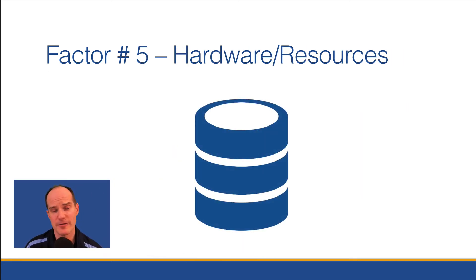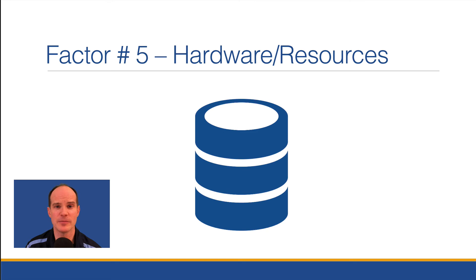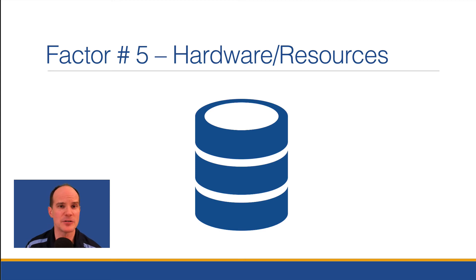Finally, factor number five — we get to the hardware resources, the part that the customer normally points to first. Yes, it does play a factor, and even more significantly, the more users you have. The more users using a system, the more important it is that you have good RAM, proper networking, and proper hard drive infrastructure with those resources properly allocated. To know what resources to use, go to the FileMaker website and look at the FileMaker server specifications. If you're using a hosting company like Productive Computing, we have various flavors of hardware resources to choose from. Generally speaking, the more users or the bigger the system, the more hardware resources you want to apply.